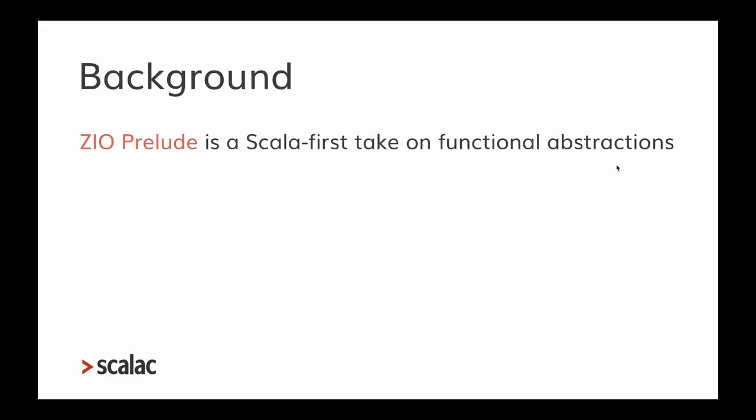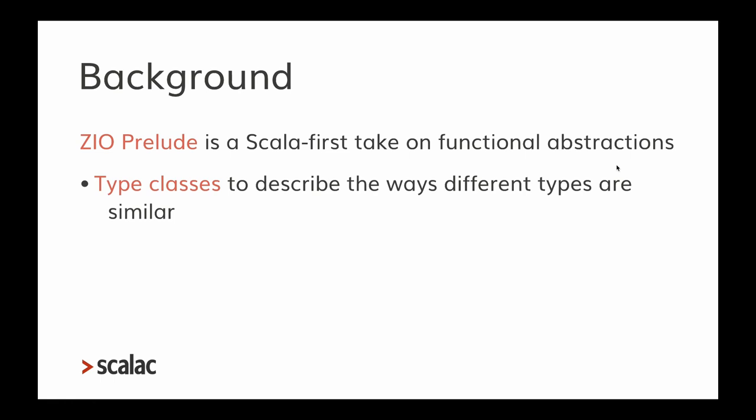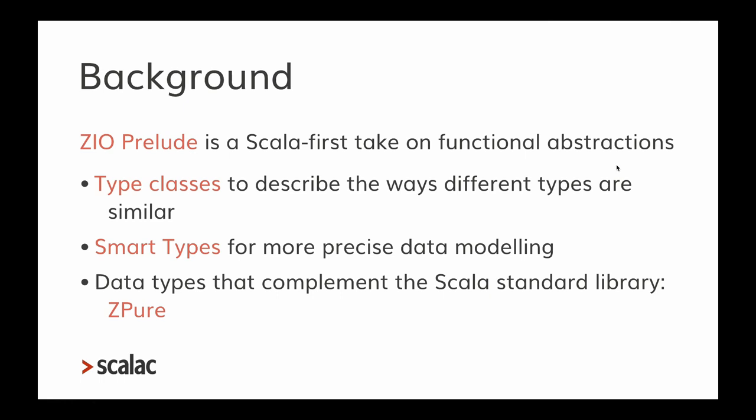Today I'm going to be talking about ZIO Prelude. ZIO Prelude is a Scala-first take on functional abstractions. It offers us type classes to describe the ways different types are similar, smart types for more precise data modeling, and data types that complement the Scala standard library, such as ZPure.